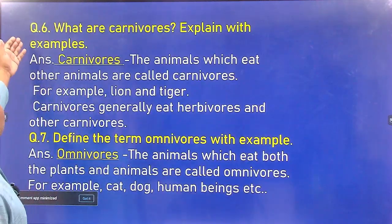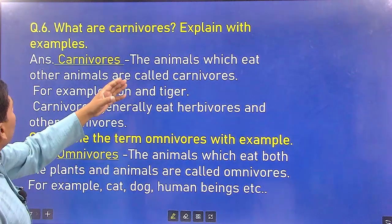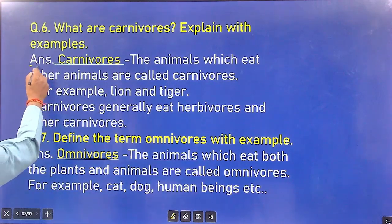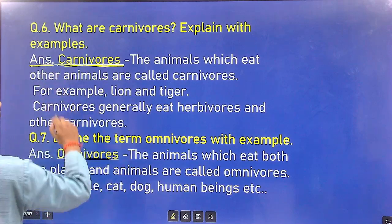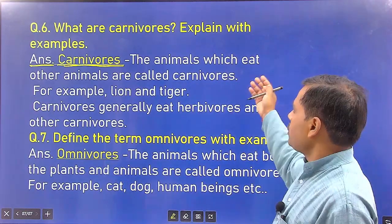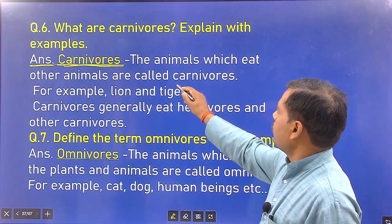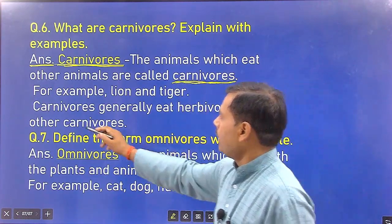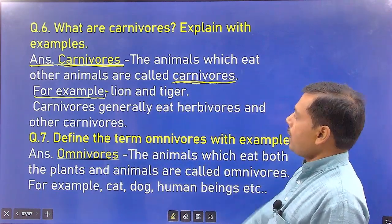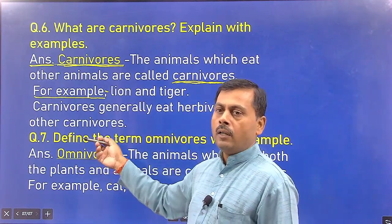Question 6: What are carnivores? Explain with examples. The animals which eat other animals are called carnivores. For example, lion and tiger. Carnivores generally eat herbivores and other carnivores.